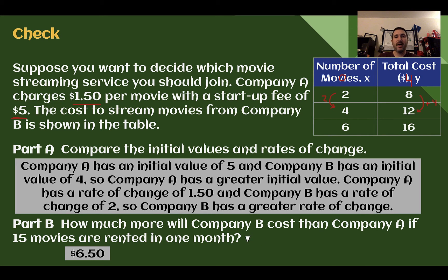How much more would B cost than A if each rents 15 movies? So for A, we can do $1.50 times 15 and then plus that $5 initial fee. So 15 times 1.5 is $22.50, so 15 times $1.50 would be $22.50 plus 5 more. So for Company A, Company A is going to cost $27.50 in one month if they rent 15 movies.